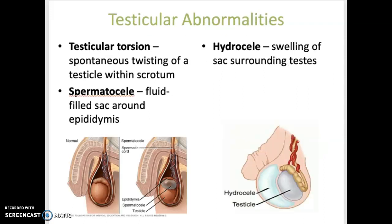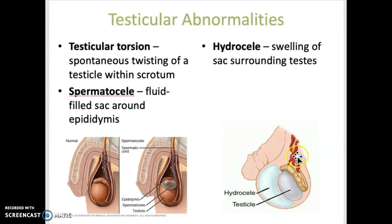Testicular torsion is a spontaneous twisting of a testicle within the scrotum. Spermatocele is a fluid-filled sac that develops in the epididymis. A hydrocele, which is shown here, is a swelling of the sac surrounding the testes. And a varicocele is swelling of the veins in the spermatic cord. Orchitis is inflammation of one or both testes.